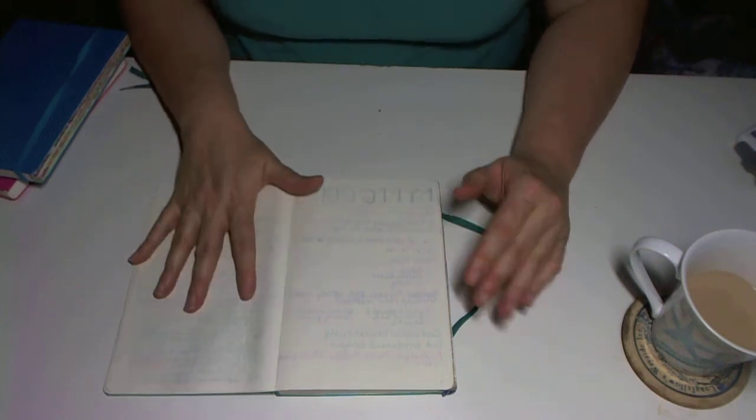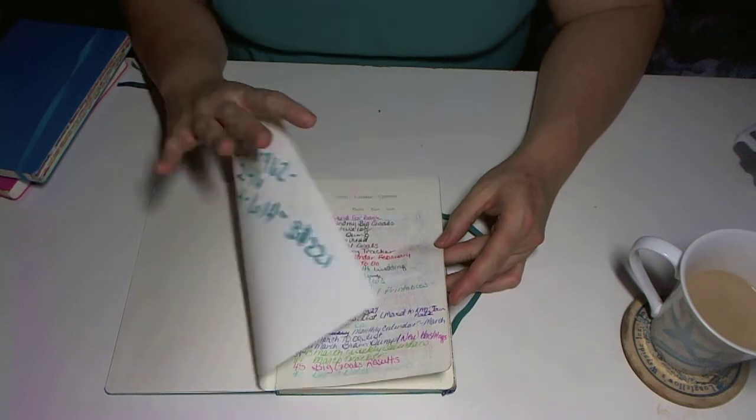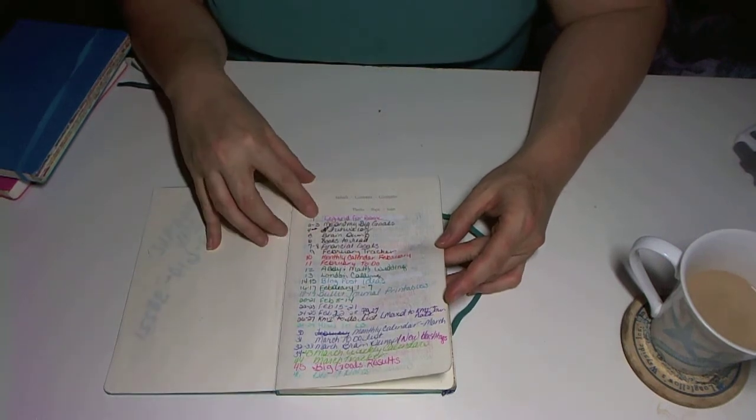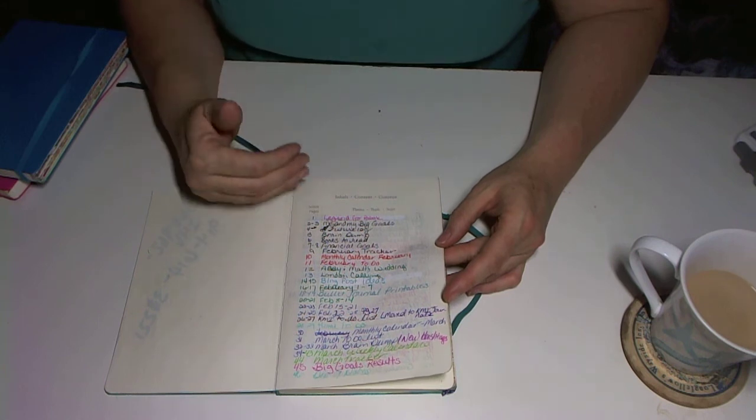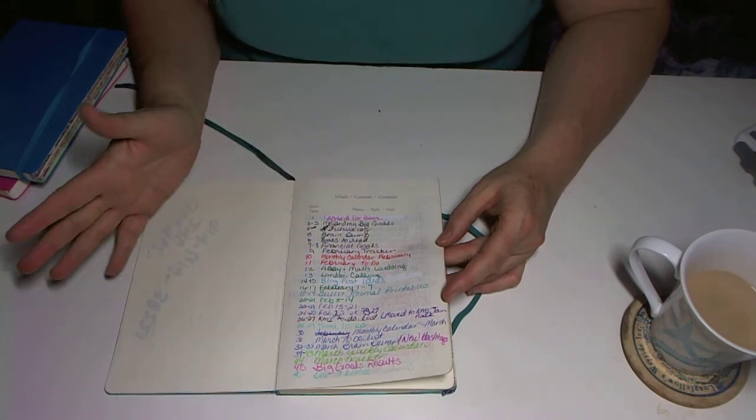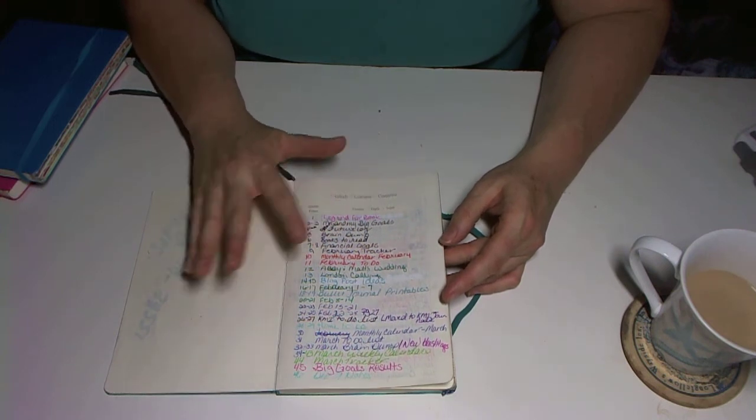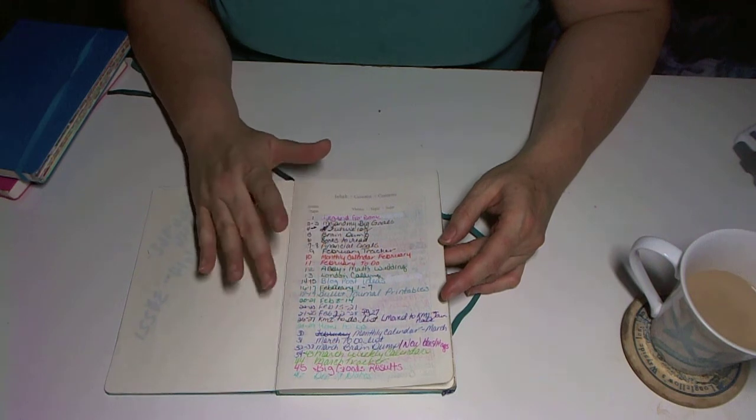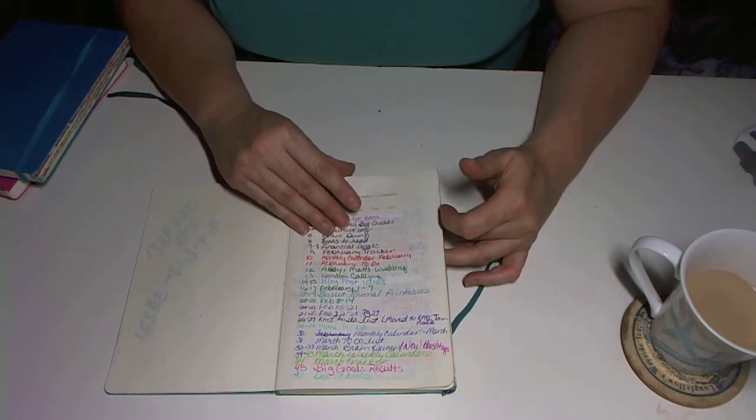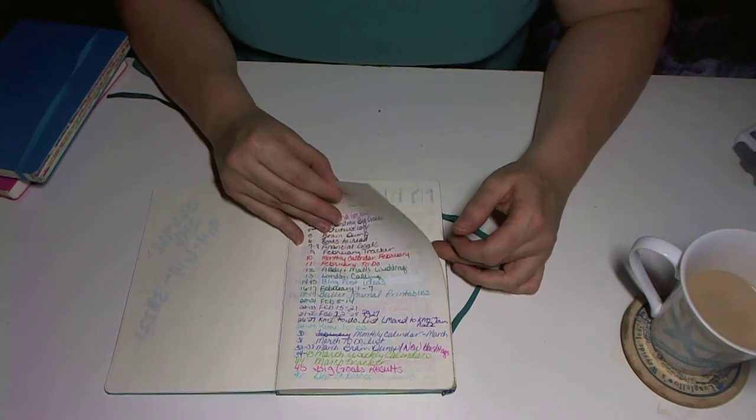I started my first bullet journal in, I think, February of this year. I followed Boho Berry's stuff for a while, but then I kind of had to think about my own stuff and what worked for me and what didn't out of what she was doing. I'll talk about the evolution of this over time.